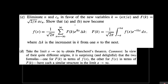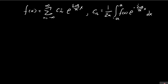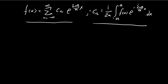In part c, we're being asked to rewrite the expression for f of x into this form over here. You can see that it's actually pretty similar to what we obtained in part a and part b. Recall that in part a, we found that f of x is equal to this infinite sum, and then in part b, we found that c of n can be expressed by this integral.